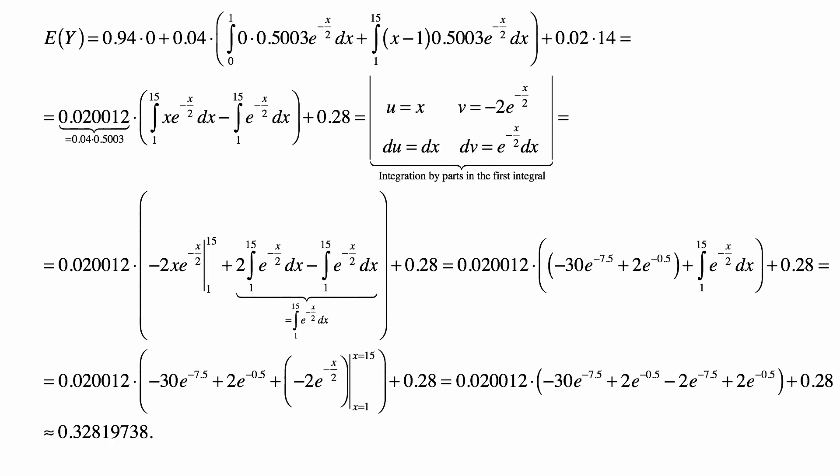So, we do this integration by parts in the first integral, and what do we get? Well, we get that coefficient of 0.020012 in front of the difference of the integrals, and we end up with the expression of minus 2X e to the minus X over 2 evaluated from 1 to 15.